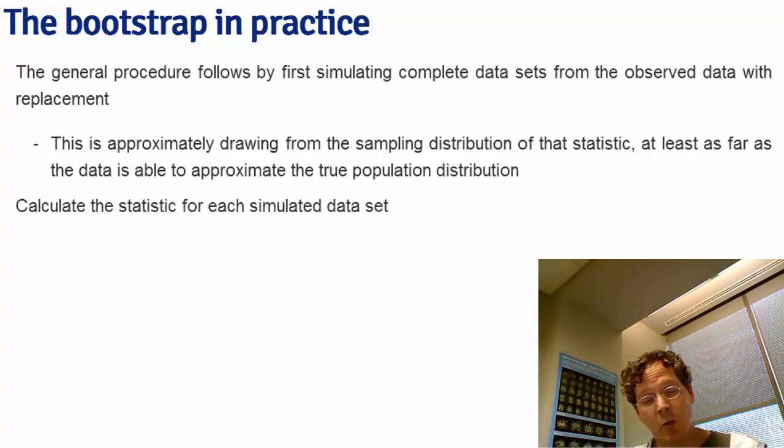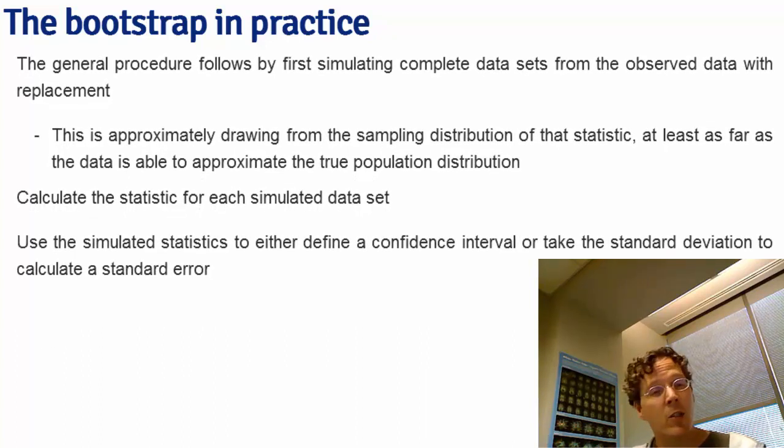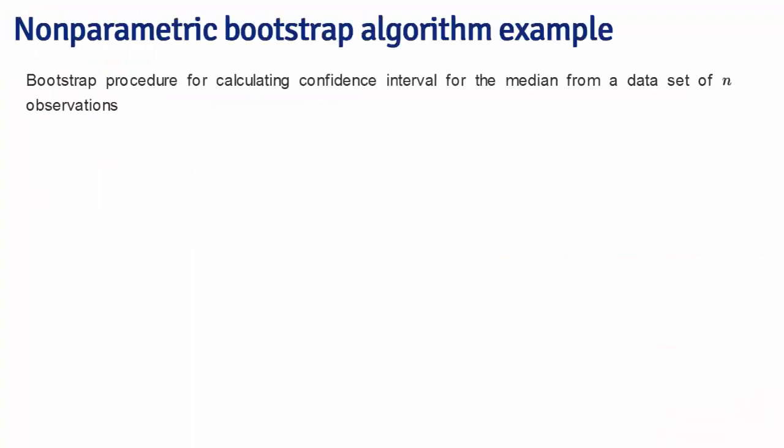Just as a reminder, we're going to calculate the statistic for each simulated data set. And then we're going to use these simulated statistics to either define a confidence interval or to take the standard deviation of this distribution in order to calculate a standard error. Let's go through the Bootstrap algorithm in a little bit of detail for calculating a confidence interval or Bootstrap standard error for the median from a set of n observations.